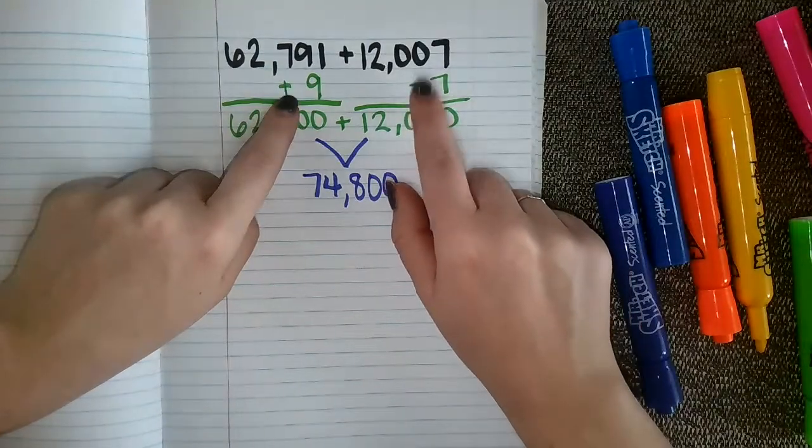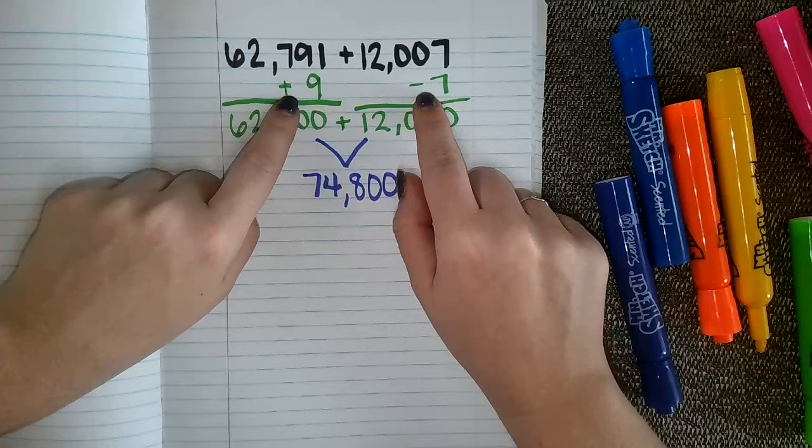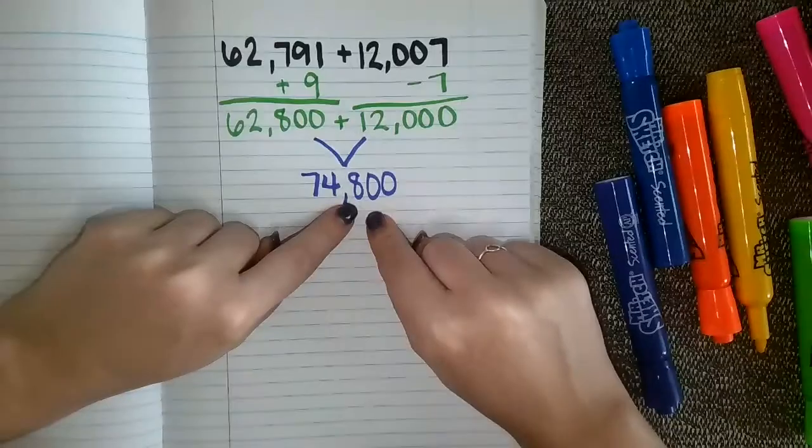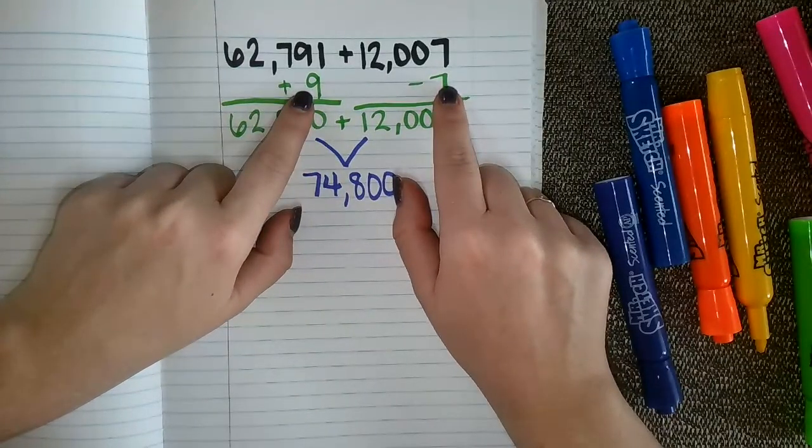Now, the opposite of addition is subtraction. So I actually kind of fixed myself over here by subtracting seven. And the difference is what I need to take away from here. So the difference between nine and seven is two.